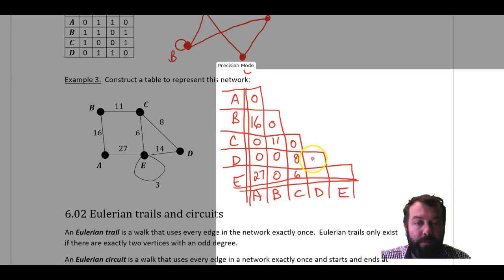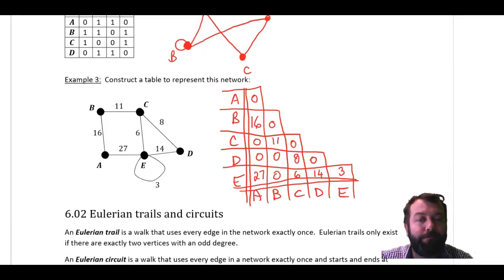Now, D here, we have no loop at D, but D to E is 14. And I do have a loop at E with a length of 3. And that's it. That's how we create a table from a network graph. And previously, we created a network graph from a table.